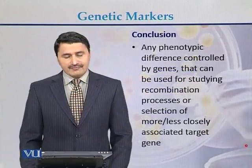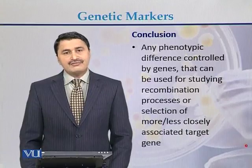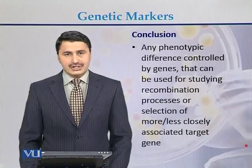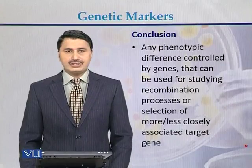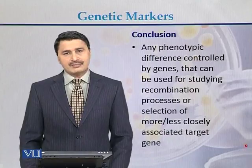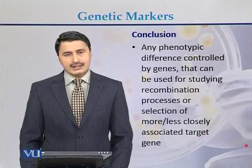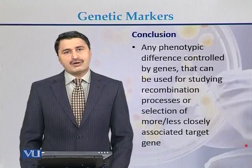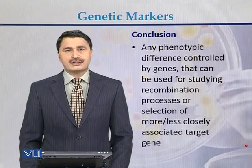In conclusion, genetic markers are any phenotypic difference controlled by genes that can be used for studying the recombination processes or selection of more or less closely associated target genes. Genetic markers are of two types: morphological markers and molecular markers. And molecular markers are of two types: protein markers and DNA markers.